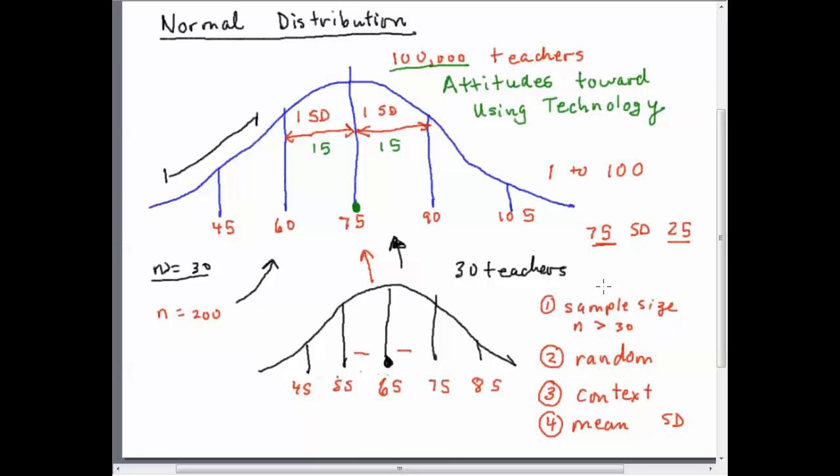I forgot to write sample down here so this is the sample population. We always have to sample things because we can't look at 100,000 teachers. We want to make sure that our sample is representative and can say something about the normal distribution. So that's the difference between sample and normal distribution and those are the things that you need to look at to check out whether you think that the findings are representative of the normal population.